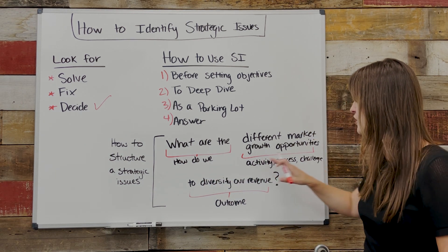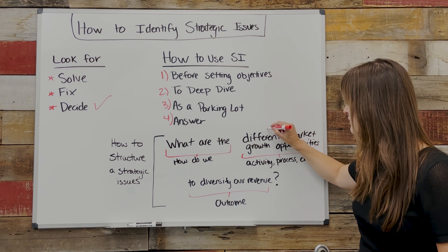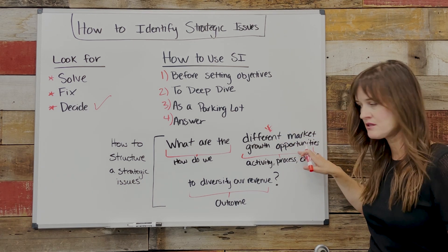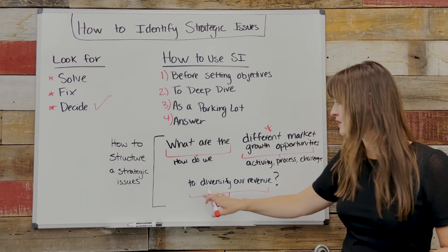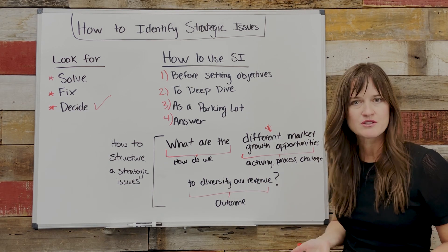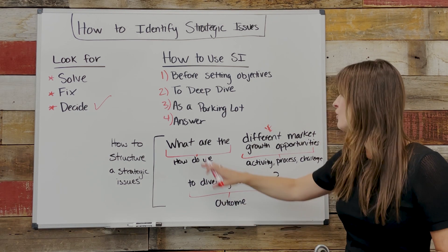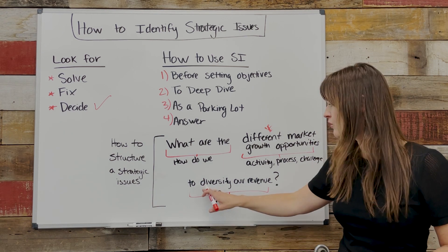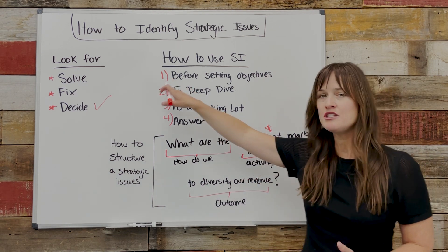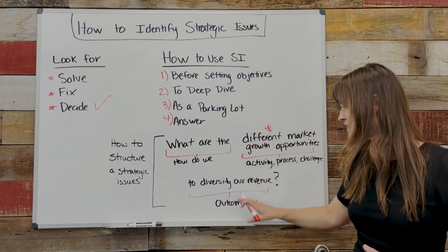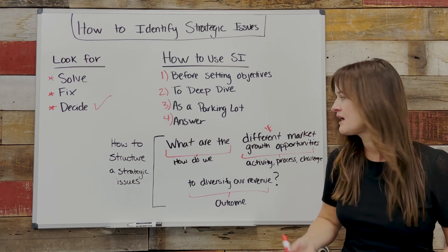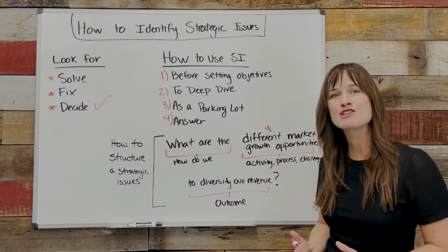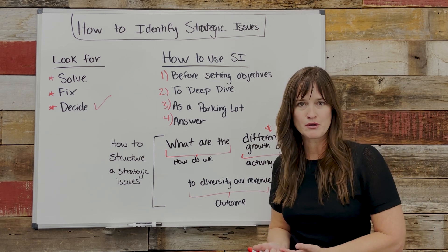Activity, process, challenge. So for example: "What are the different market growth opportunities that we need to look at in order to diversify our revenue?" The strategic issue that was presented is we need to diversify our revenue — so structure it in the form of a question so you can actually answer it during your process.